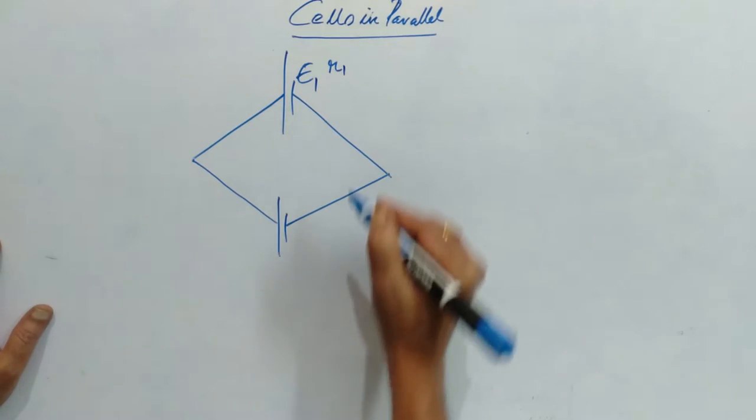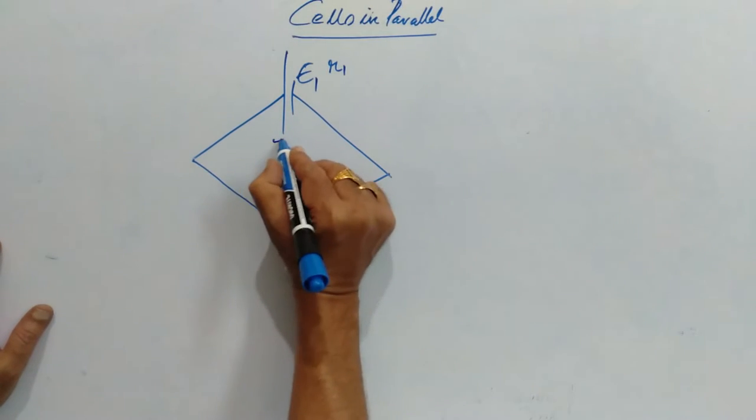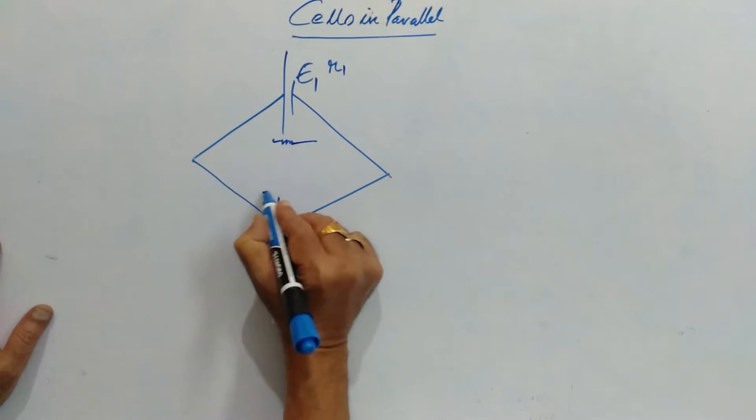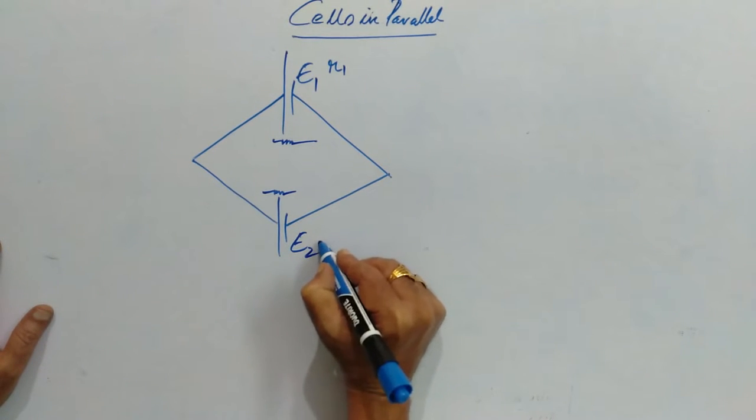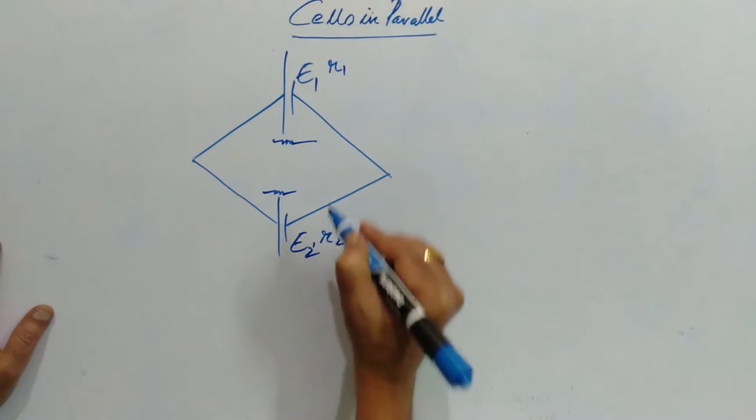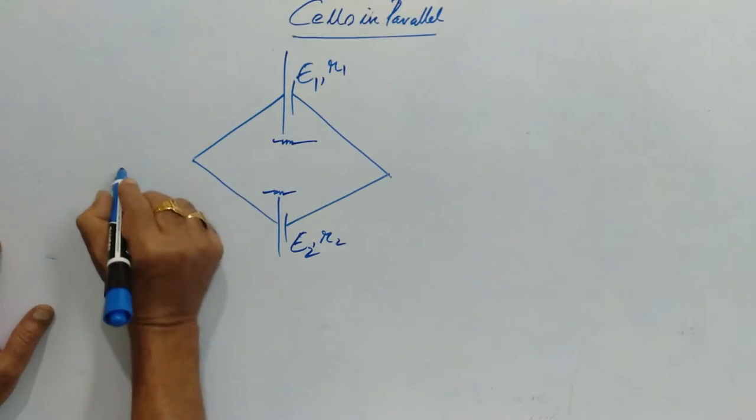and R1 is its internal resistance. Now, here its EMF is E2 and R2 is the internal resistance.